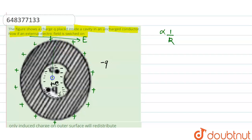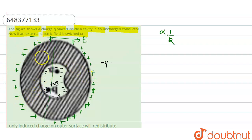When we apply an external electric field — suppose in this direction — the half portion on one side will have positive charges distributed, and the other half surface will have negative charges. The net charge remains the same and the charges are uniform, but the applied electric field will not affect the inner cavity at all. There will be only redistribution of charges on the outer surface, not on the inner surface.